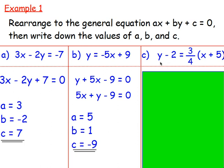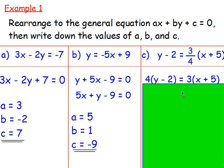The next one is a wee bit trickier: y take away 2 equals three quarters of x add 5. The first thing to think about is that there's a fraction — everybody hates fractions, unless you're Freddy and you love fractions — so you want to get rid of the denominator first. How do we get rid of the divide by 4? You can multiply both sides by 4. Doing that, I'd be multiplying the y take away 2 by 4, giving me 4 bracket y take away 2 equals 3 bracket x add 5.